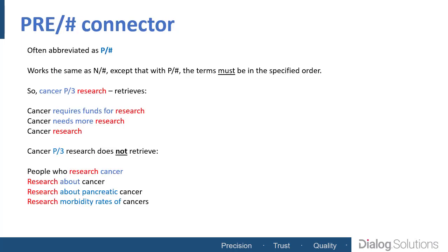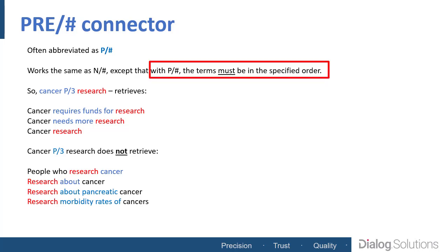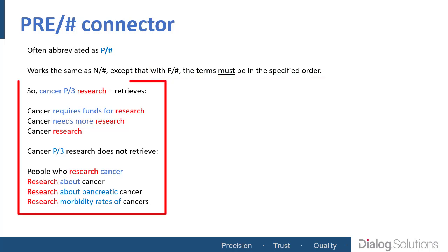With the NEAR connector, you can control how close together you want your terms to be, but there may be times when you also want to control the order the words appear in — and that's where you would use the PRE connector. With NEAR, the terms on either side can be in any order, but with PRE, they must be in the same order that you've put them in your search statement. So PRE will generally get fewer hits than NEAR, but at times this will be part of what you're trying to do.